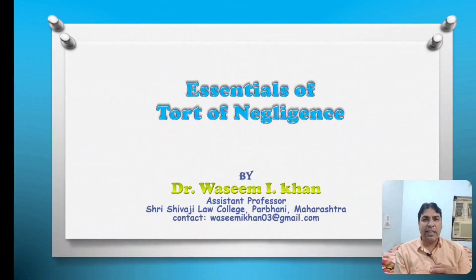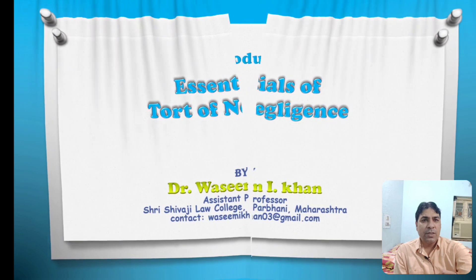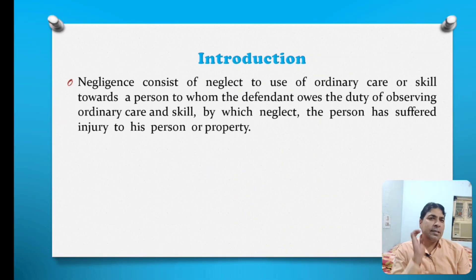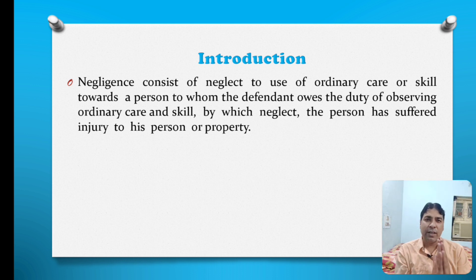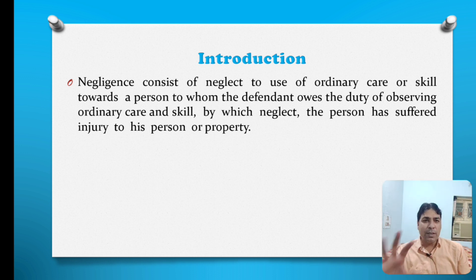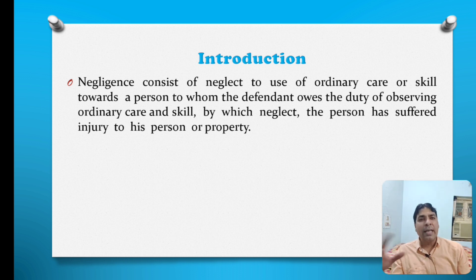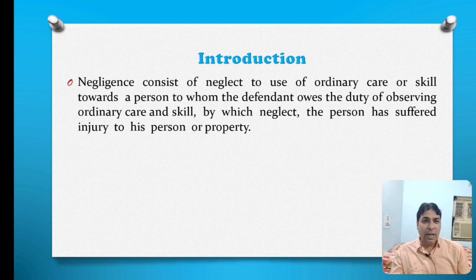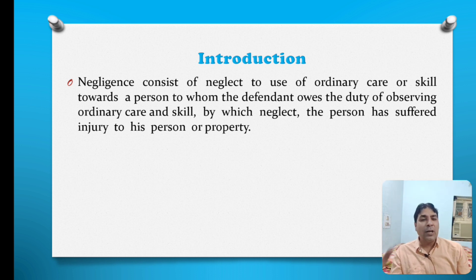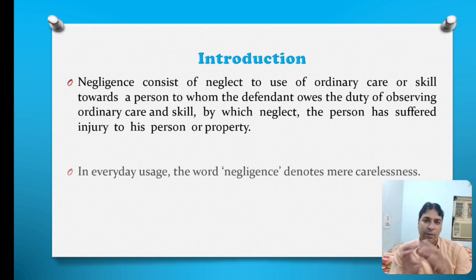Essentials of tort of negligence we will discuss in this lecture. First of all, we will discuss the introduction. Negligence consists of neglect to use of ordinary care or skill towards a person to whom the defendant owes the duty of observing ordinary care and skill, by which neglect the person has suffered injury to his person or property. It means if the person is having a duty to take ordinary care or skill towards a person, but if that particular person fails to take care and it results in damage to someone else, then it means the person has committed a tort of negligence.